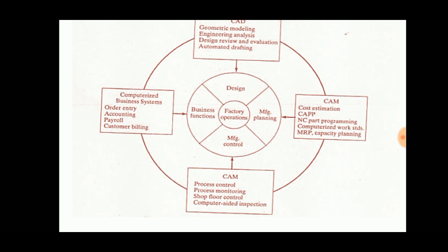Next is manufacturing planning. It involves cost estimation — how much it costs to produce the product — computer aided process planning to determine the sequence of processes for a particular product, NC part programming, computerized work standards, and MRP capacity planning.